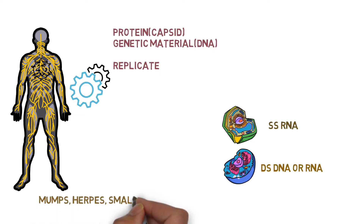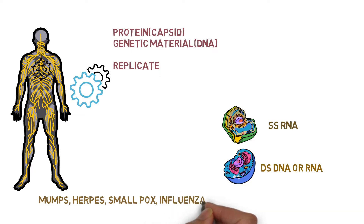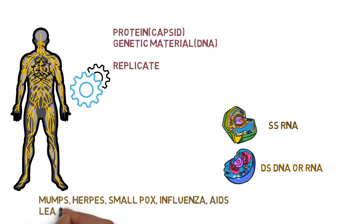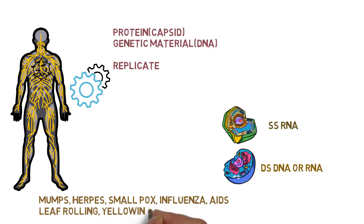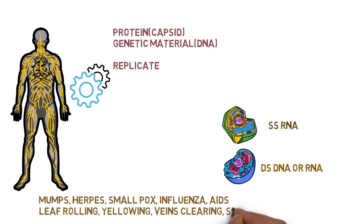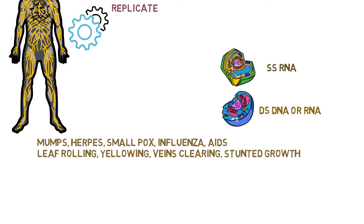Viral diseases in humans include mumps, herpes, smallpox, influenza, and AIDS. There are also many viral diseases in plants, such as yellowing of leaves, leaf mosaic patterns, leaf deformation, and dwarfism.